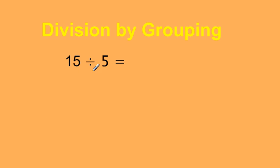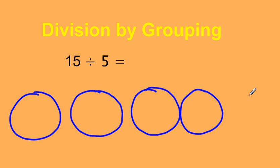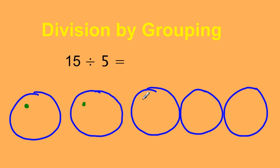With this example, we have 15 divided by 5. Our number 5 is going to represent the number of groups we have. So there's 1, 2, 3, 4, and 5. And I have 15 to distribute. So instead of x's, I can always draw dots: 1, 2, 3, 4, 5, 6.